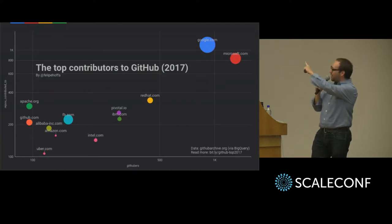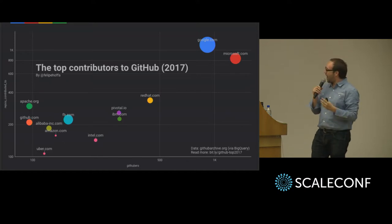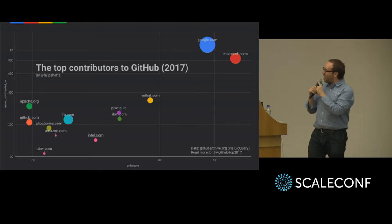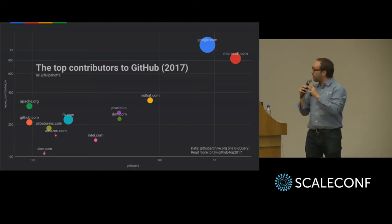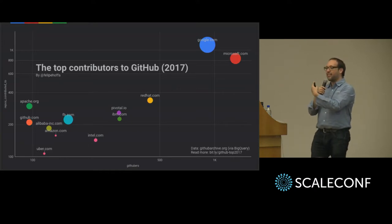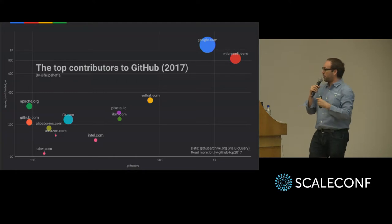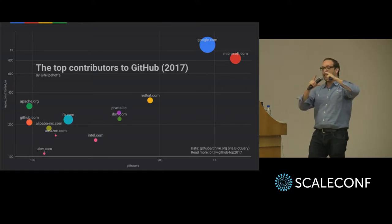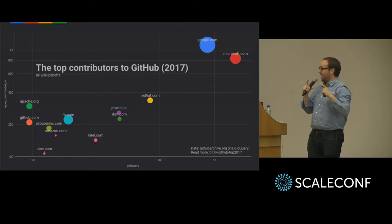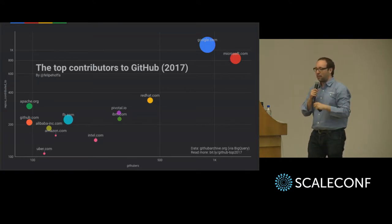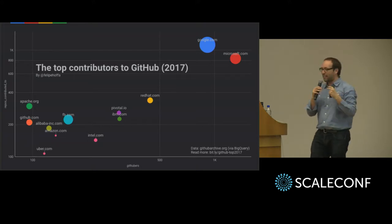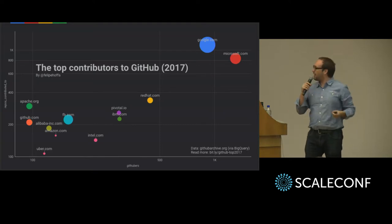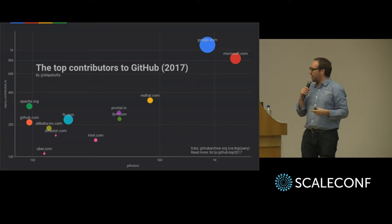Microsoft is up there — huge. But Google is also there. The huge difference is that I'm counting in more than one dimension. The three dimensions are: the number of users on GitHub I could identify as belonging to any corporation — Microsoft has the most users; the number of projects those users are contributing to; and the size of the circles is the number of stars those projects are getting. Both companies are doing pretty well, and there are a lot of other companies also doing a lot.